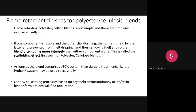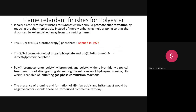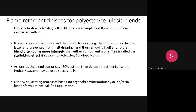When the blend comprises more than 50% cotton, you can use systems like the Proban process, based on THPC or urea chemistry. If the cotton is less than 50% — meaning the polyester component is more — you may need to use halogens like organobromine with antimony trioxide for synergistic flame retardancy, or halogen-free flame retardancy. The main problem with polyester-cellulosic blends is that they are much more dangerous compared to polyester or cotton alone, due to the scaffolding effect.